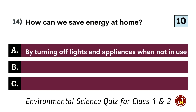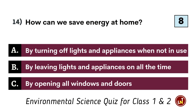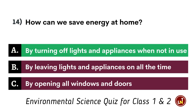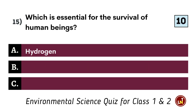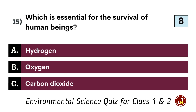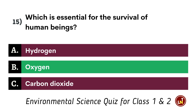How can we save energy at home? By turning off lights and appliances when not in use. Which is essential for the survival of human beings? Oxygen.